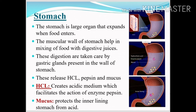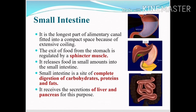Here you will see three different pictures on the screen. The first picture shows the location of the gastric gland. The second picture shows the secretions of the gastric gland: hydrochloric acid, enzyme pepsin, and mucus. The third picture shows how mucus protects the inner lining of the stomach from acid action. From the stomach, food enters into the small intestine, which is the longest part of the alimentary canal, fitted into compact space because of extensive coiling — approximately 6 meters in length. The exit of food from the stomach is regulated by the sphincter muscles, so that small amounts of food are released into the small intestine.